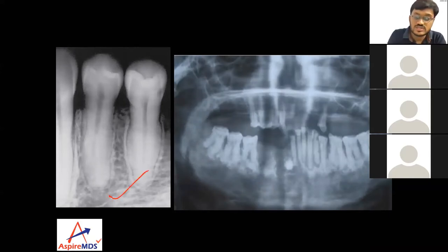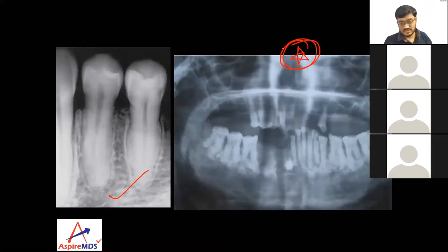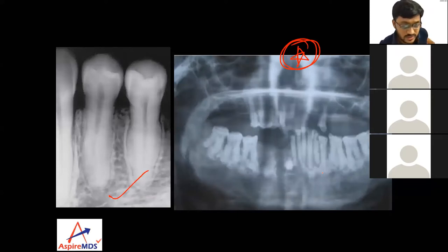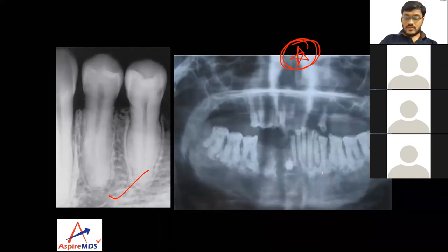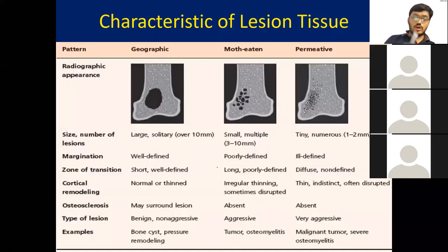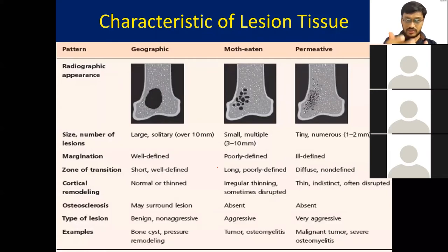The next finding is hypercementosis — both are hypercementosis. Multiple teeth having hypercementosis is seen in Paget's disease. In this mandible, in addition to multiple hypercementosis, we are also seeing osteomyelitis, which is very common in Paget's disease. Regarding the characteristic of tissue lesions within bone: the internal structure of bone loss can be of three types — the geographic type, moth-eaten type, and permeative type.